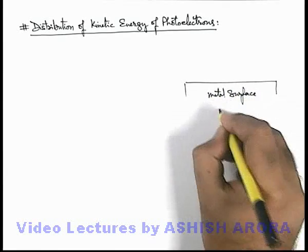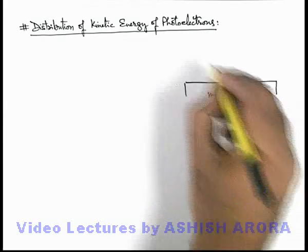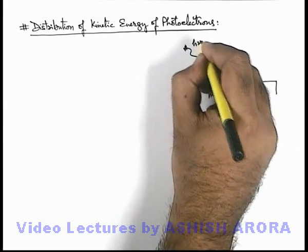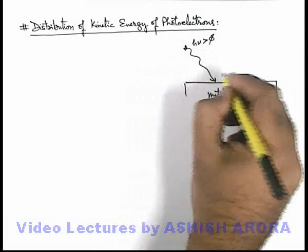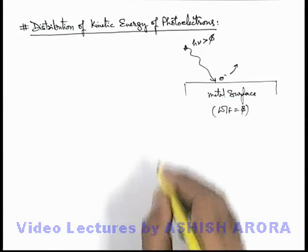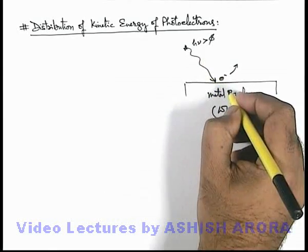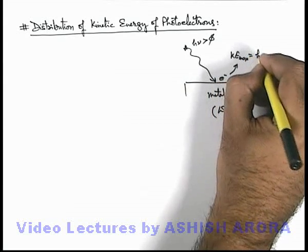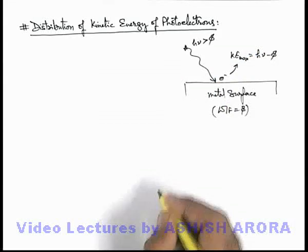which has a work function equal to φ. If a photon is incident onto it which has energy hν greater than φ, then it is capable of ejecting an electron, which will be ejected after absorption of this energy. And we have studied that the maximum kinetic energy this electron can have will be equal to hν minus φ.